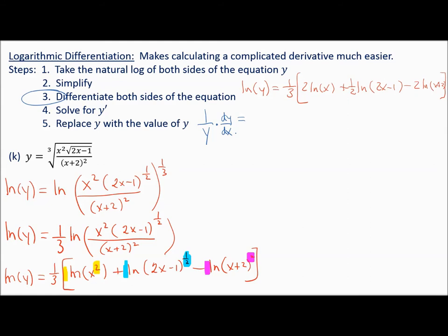On the right, I have 1 third times a bracket. The 2 in front is a scalar multiple: 2 times 1 over x. Plus 1 half times the derivative of natural log of 2x minus 1: that's 1 over 2x minus 1 times 2 (by the chain rule). Minus 2 times: the derivative of natural log of x plus 2 is 1 over x plus 2, times the derivative of the inside, which is 1.